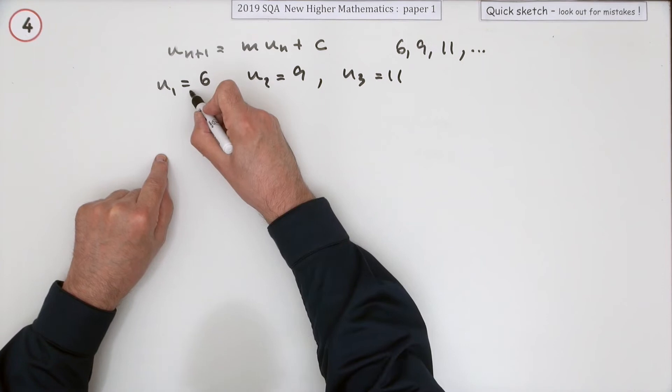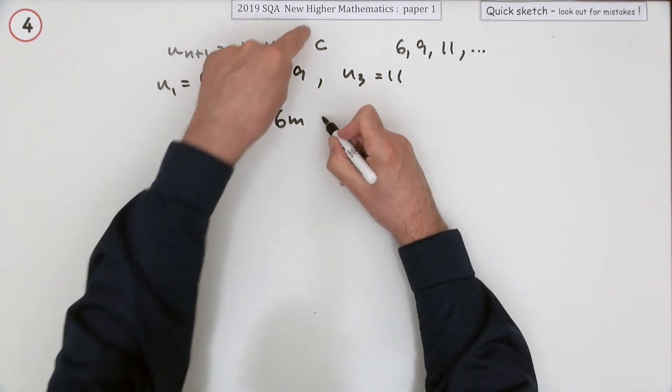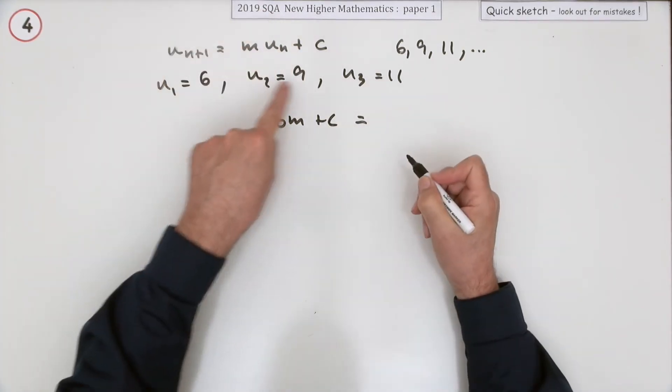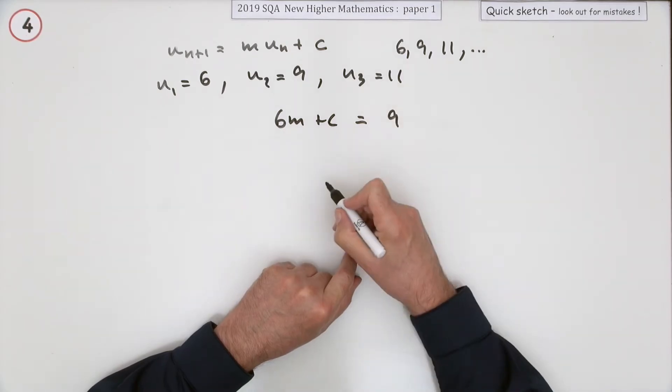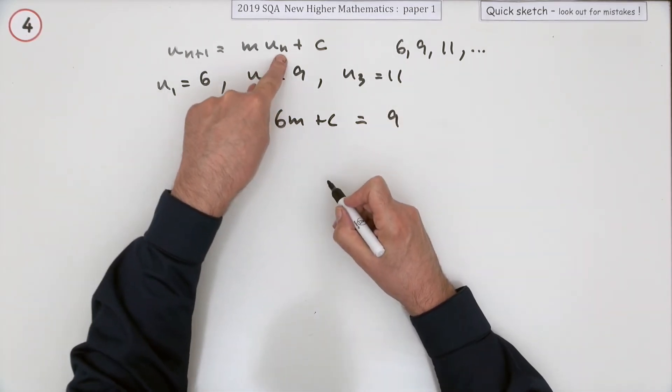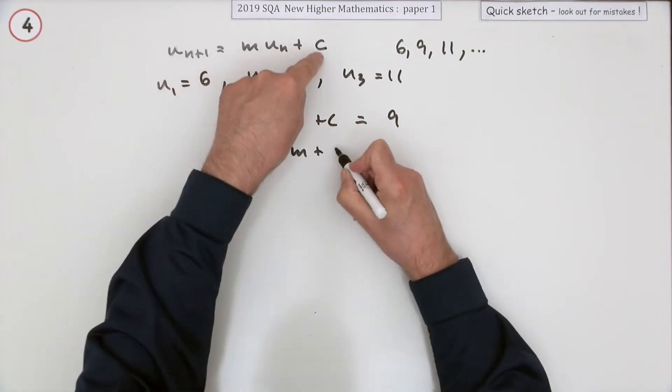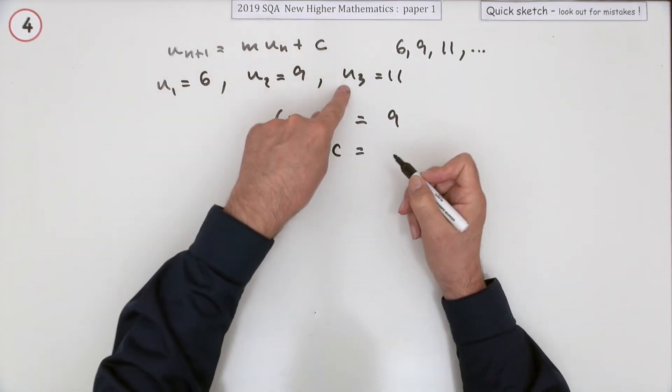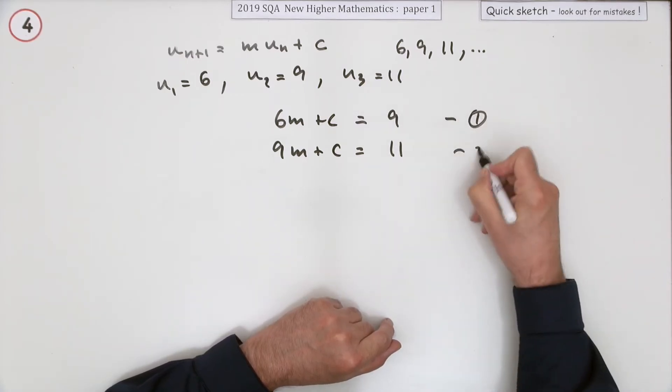So if you know U₁, multiplying it by M and adding C should take you to U₂, which is 9. Similarly, starting with U₂ which is 9, if you multiply it by M and add C, it'll take you to U₃ which is 11. A pair of simultaneous equations.